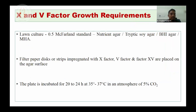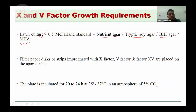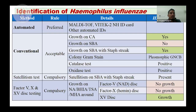For X and V factor requirement testing, a lawn culture of the organism to be identified is performed using 0.5 McFarland standard. Media that can be used include nutrient agar, tryptic soy agar, BHI agar, and Mueller-Hinton agar. Filter paper discs or strips impregnated with these factors are placed on the agar, and incubation is for 20 to 24 hours at 35 degrees Celsius in 5% CO2.